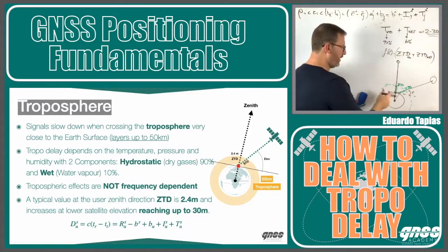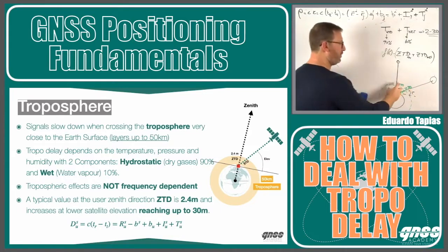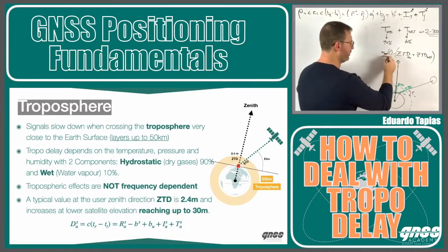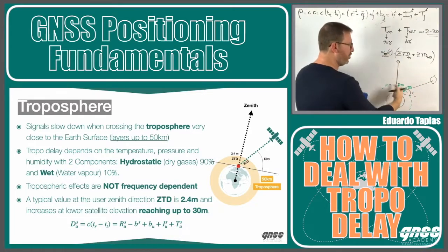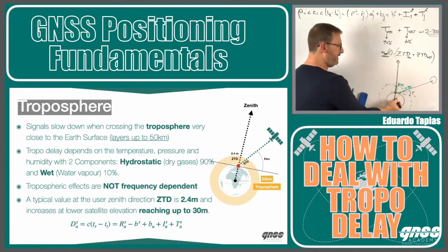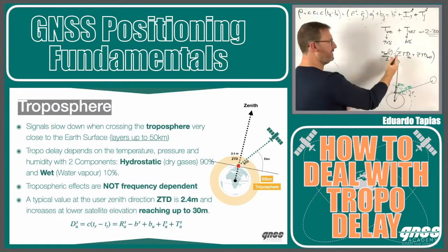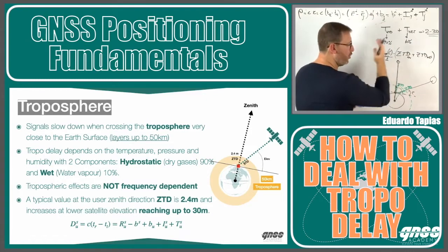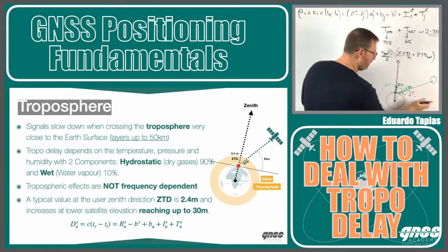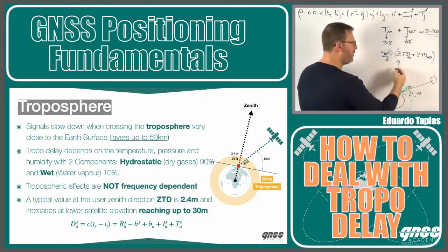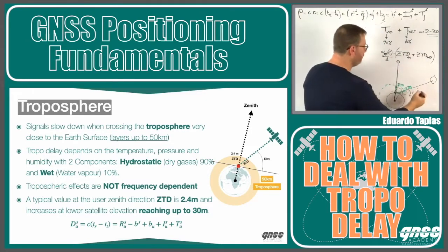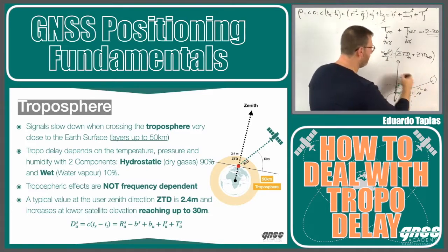In order to compare the slant delay and the zenith tropo delay, we use what we call an obliquity factor, which is a function of the elevation of the satellite. If the elevation is 90 degrees, it will be the zenith, and this factor will be something like one. At low elevation angles, like 10 degrees, this can go up to something like 10 as a multiplication factor.